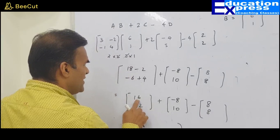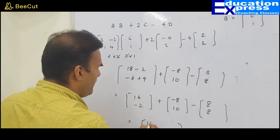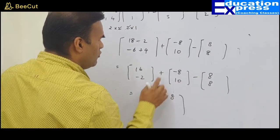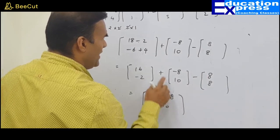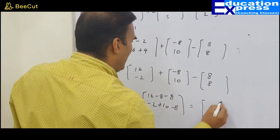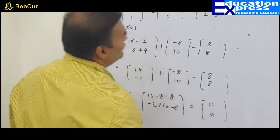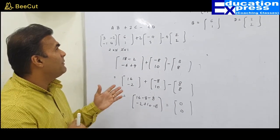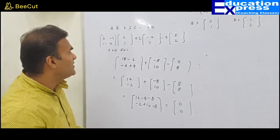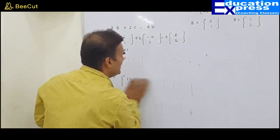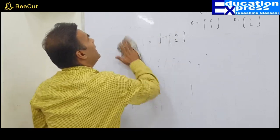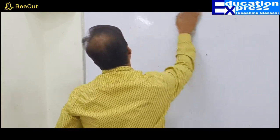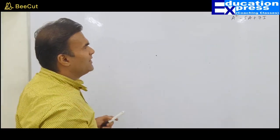Let us find out the resulting: 16 plus minus 8 plus minus 8 is 0. Minus 2 plus 10 plus minus 8 is 0. That gives us the zero matrix. It was so simple and easy, my dear friends. Getting marks out of the matrices chapter is really simple and manageable — you can assume that you get an insurance of 6 marks for this chapter and you are bound to get these marks in the exam.